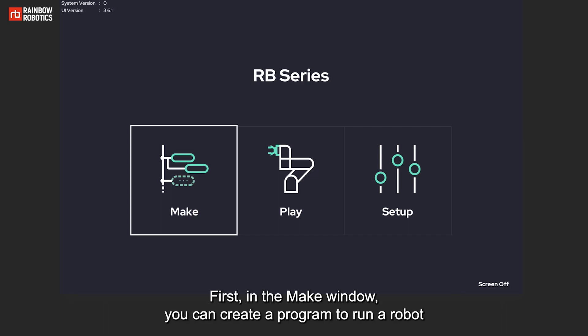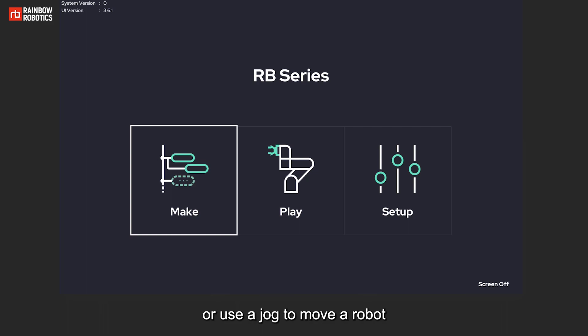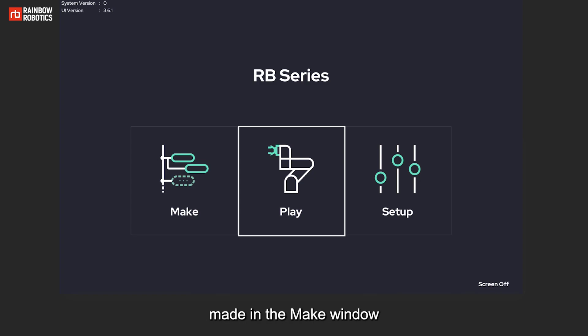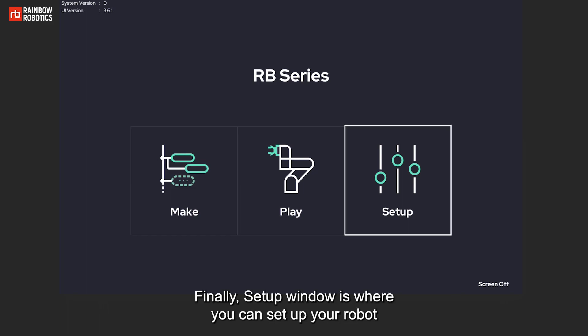First, in the Make window, you can create a program to run a robot, or use a jog to move a robot. Next, we have the Play window. In here, you can play the program made in the Make window. Finally, the Setup window is where you can set up your robot.